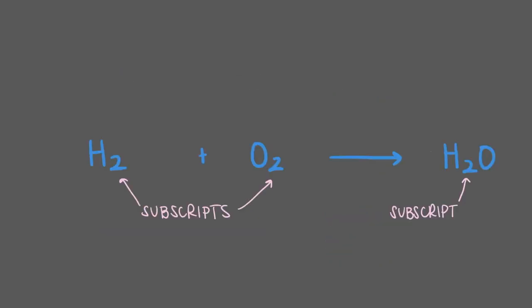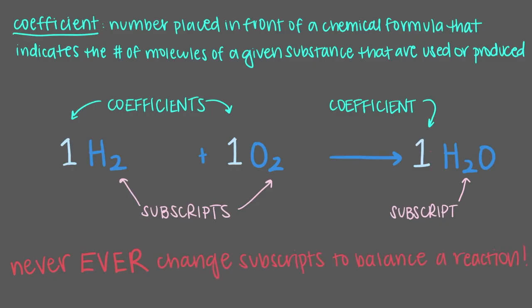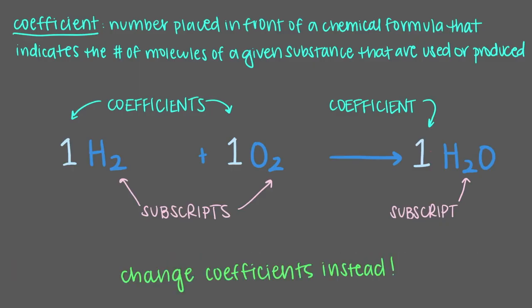The second set of numbers that are important are the coefficients. A coefficient is the number placed in front of a chemical formula. They indicate the number of molecules of a given substance that are used or produced. If there is no coefficient in front of a chemical formula, then it is implied that the coefficient is 1. The rule is that we can never change the subscripts to balance a reaction, so we need to change the coefficients.